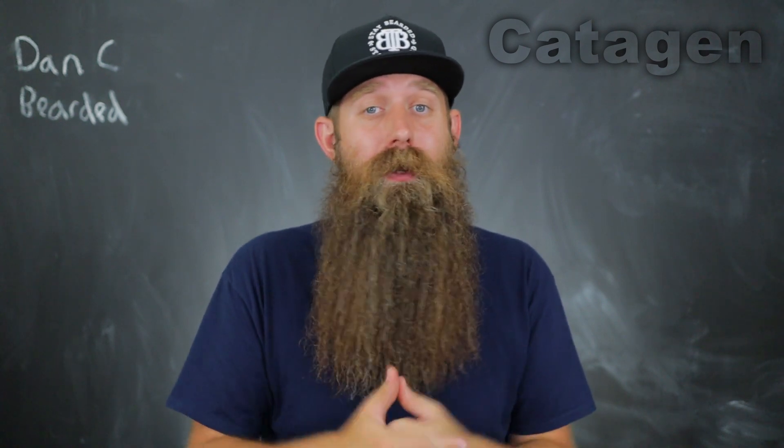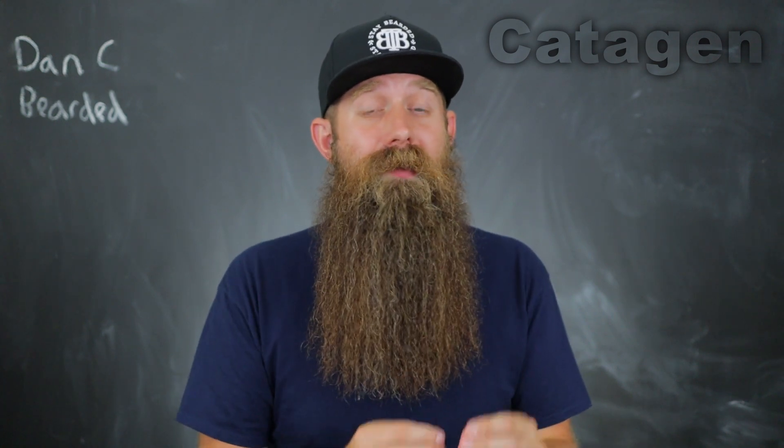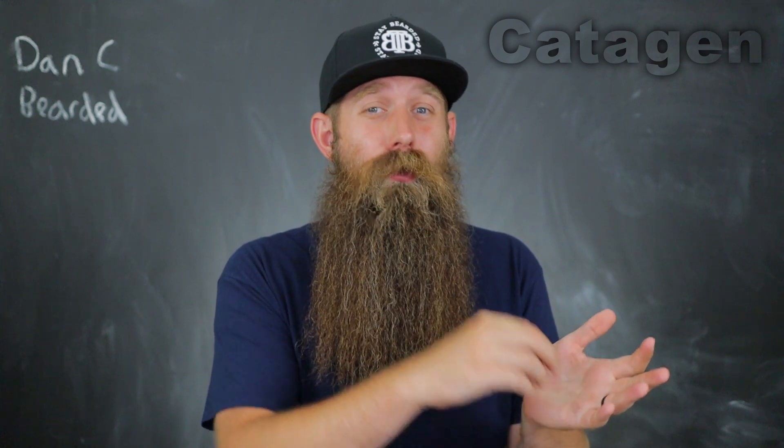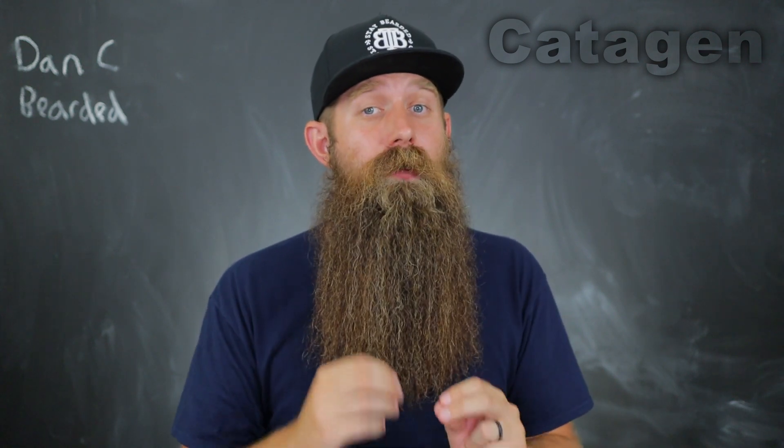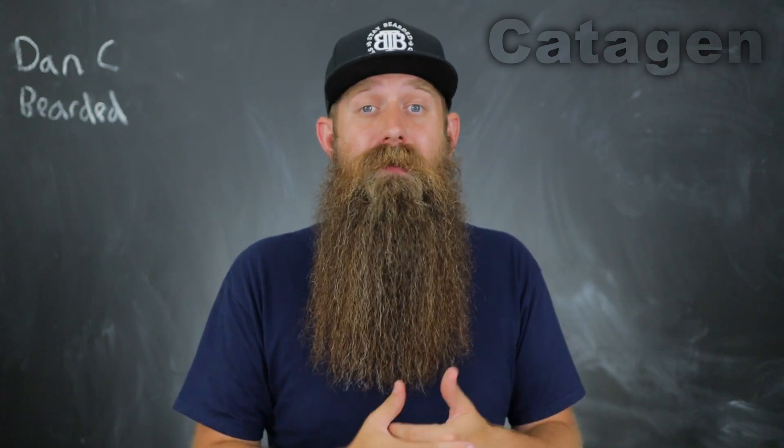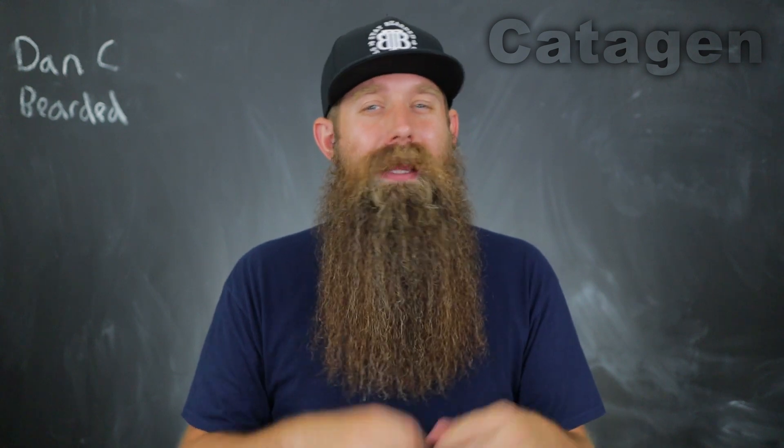The second phase of the hair growth cycle is the catagen cycle. This is the shortest one — it only lasts for a couple of weeks. At this point the beard hairs have officially stopped growing. What happens is the hair transitions away from the hair follicle and attaches to the skin. This is where blood flow is cut off and all those nutrients are cut off from the hair. This is also the phase where we see premature shedding most often, through over-aggressive grooming and bad habits that remove the hair too early while it's going through its transitional phase.